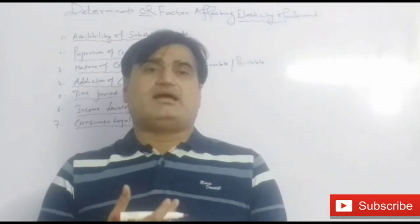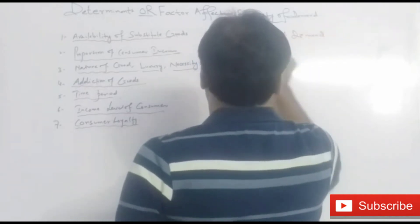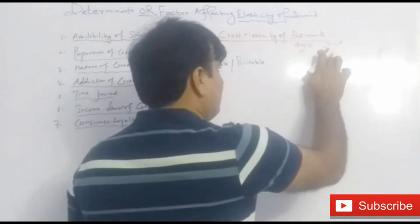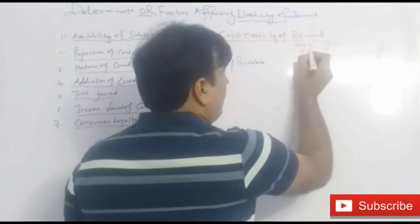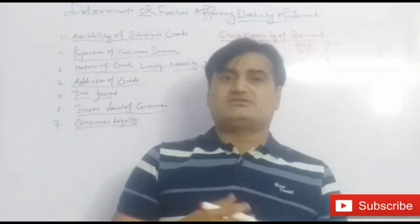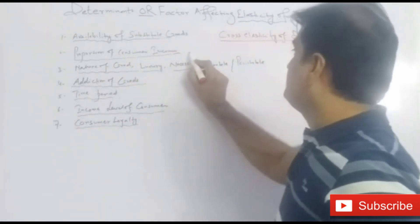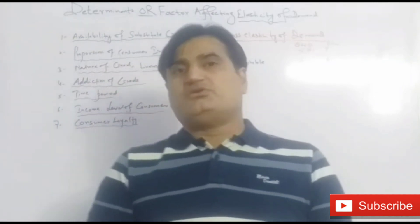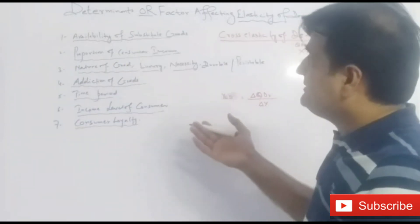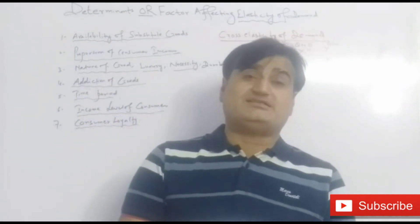The availability of substitute goods relates to cross-elasticity of demand — that is, the change in quantity demanded of good X due to a change in the price of good Y. When the price of Y increases, the quantity demanded for X will increase; these are substituted goods. When cross-elasticity is positive, it means the goods are substitutes. When cross-elasticity is negative, the goods are complements. The proportion of consumer income relates to income-elasticity of demand — the change in quantity demanded due to a change in income. Price-elasticity of demand means quantity demanded increases or decreases due to a change in the price of a commodity.